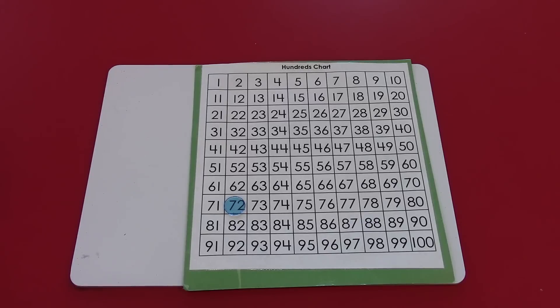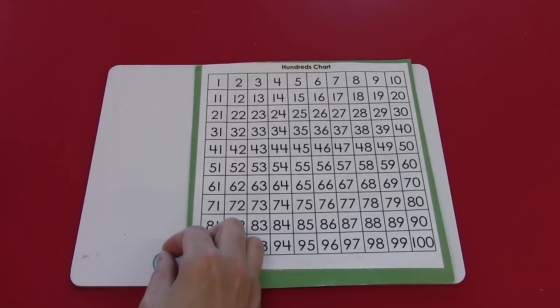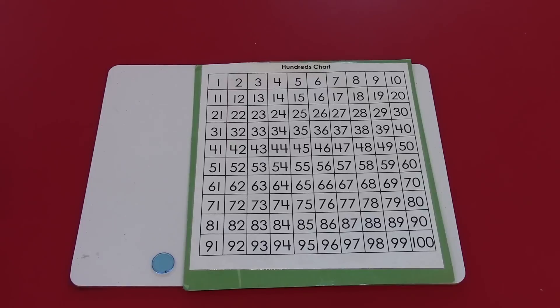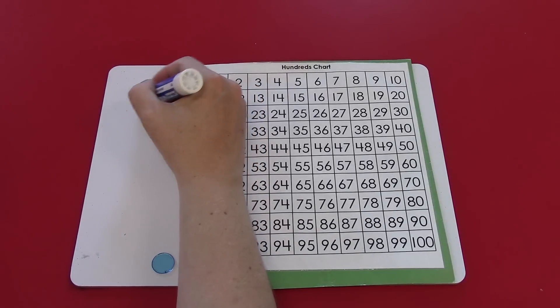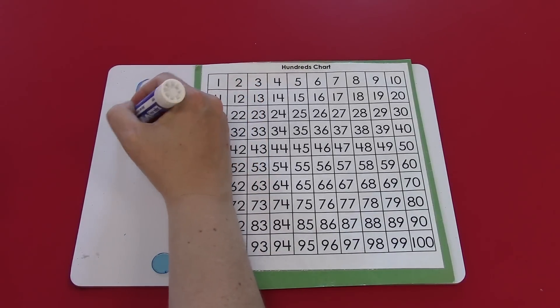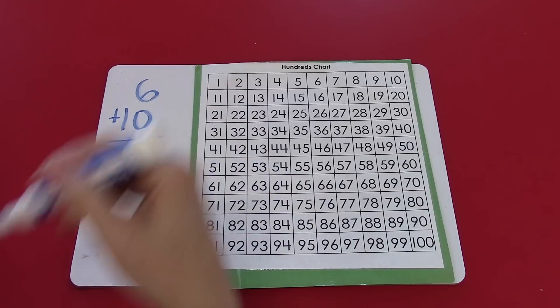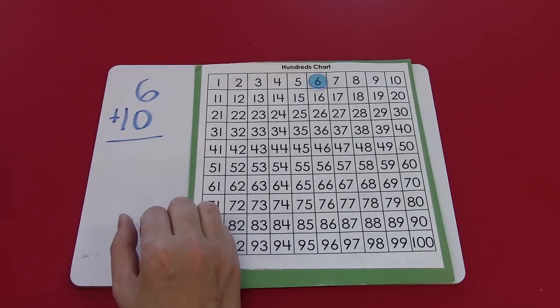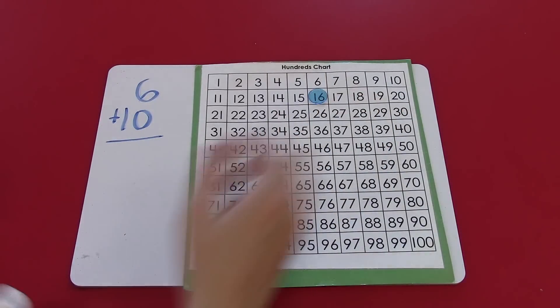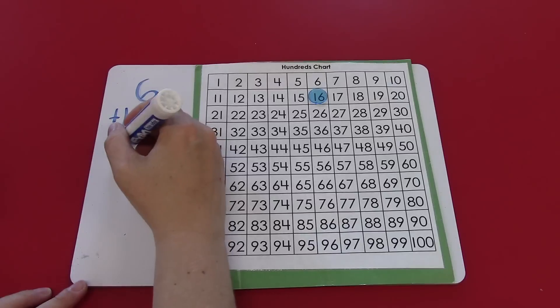Remembering those two things will make adding on the hundreds chart very easy. Let's start with an easy question. Let's start with 6 plus 10. I'm going to start at the 6 and if you remember going straight down is plus 10, 16.